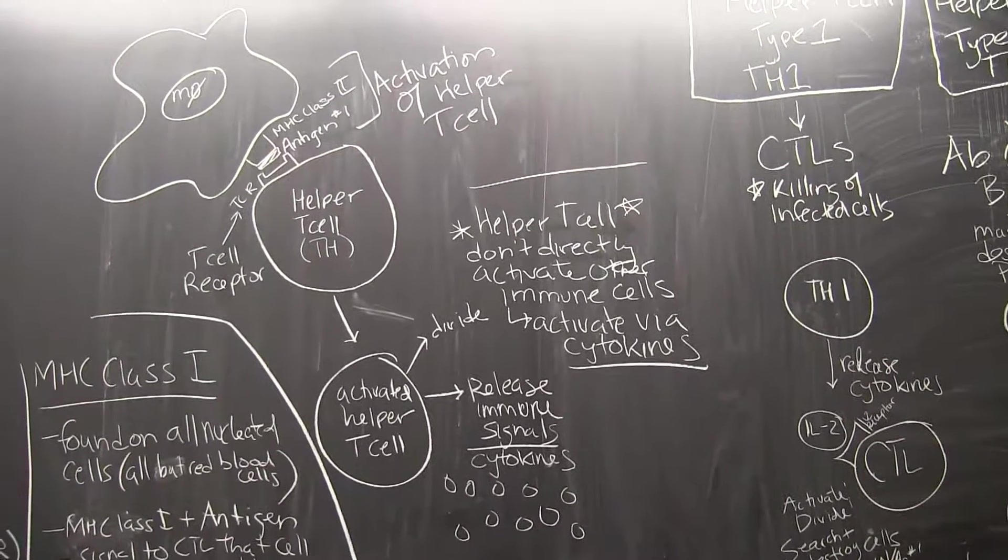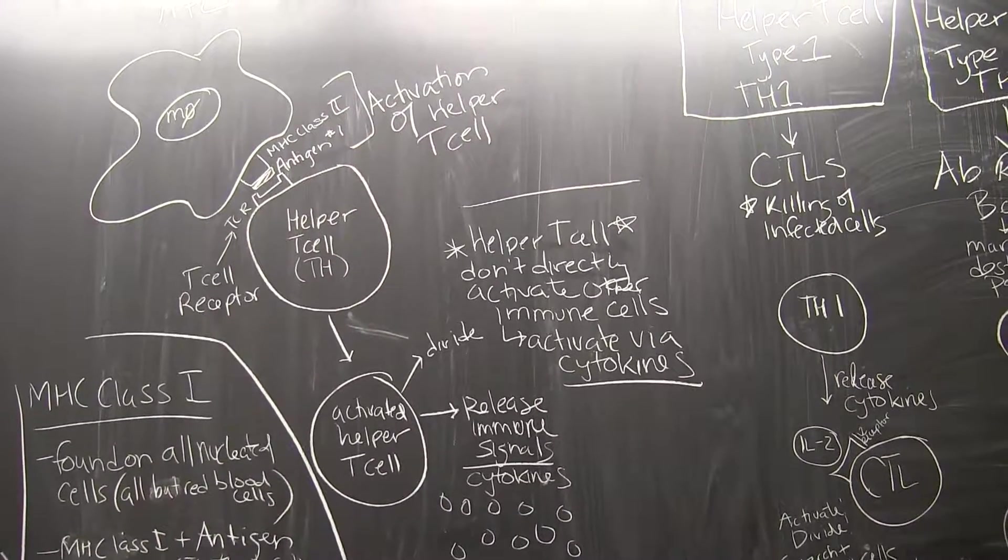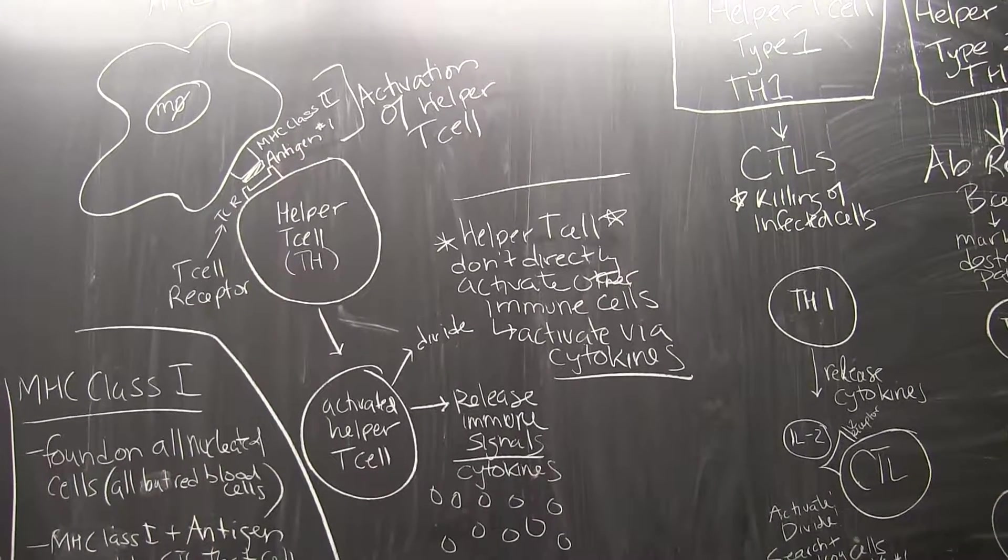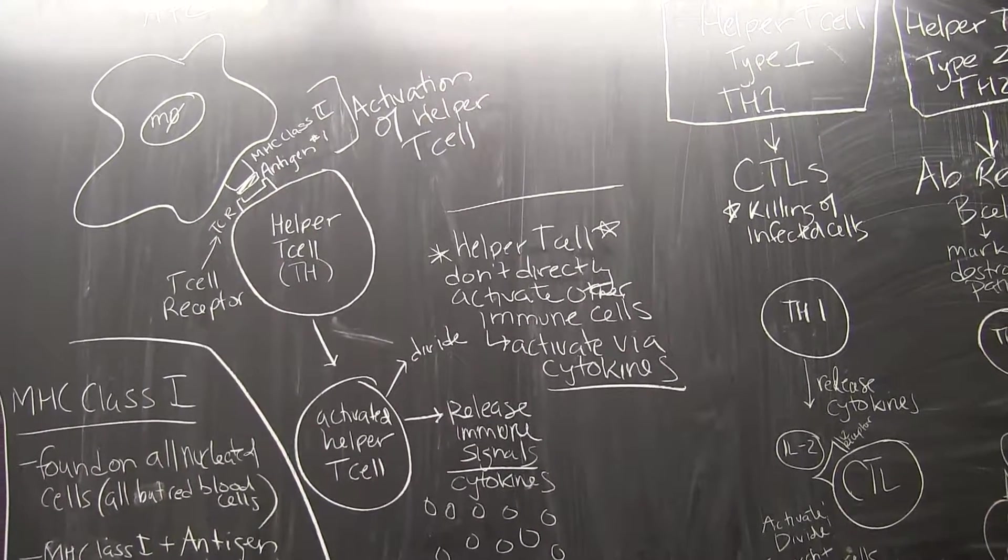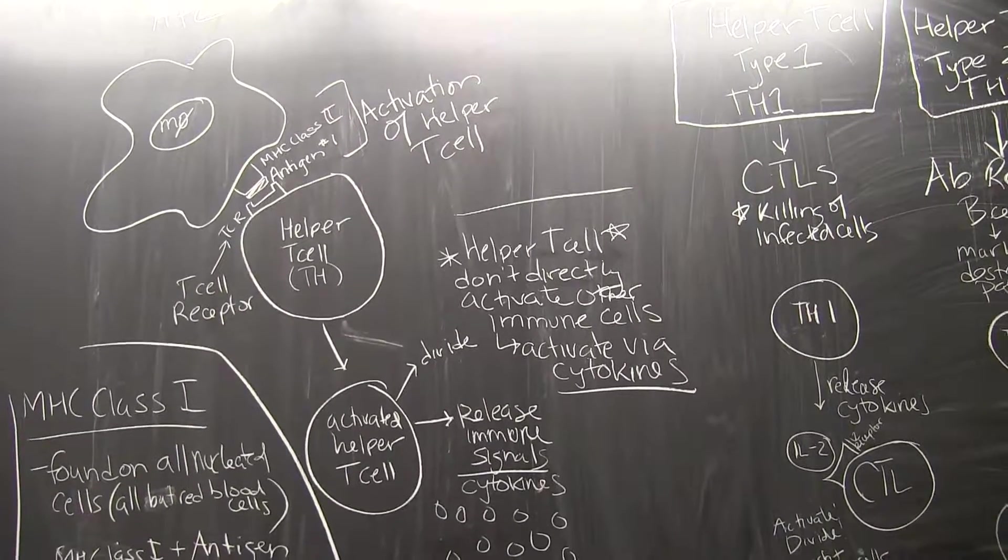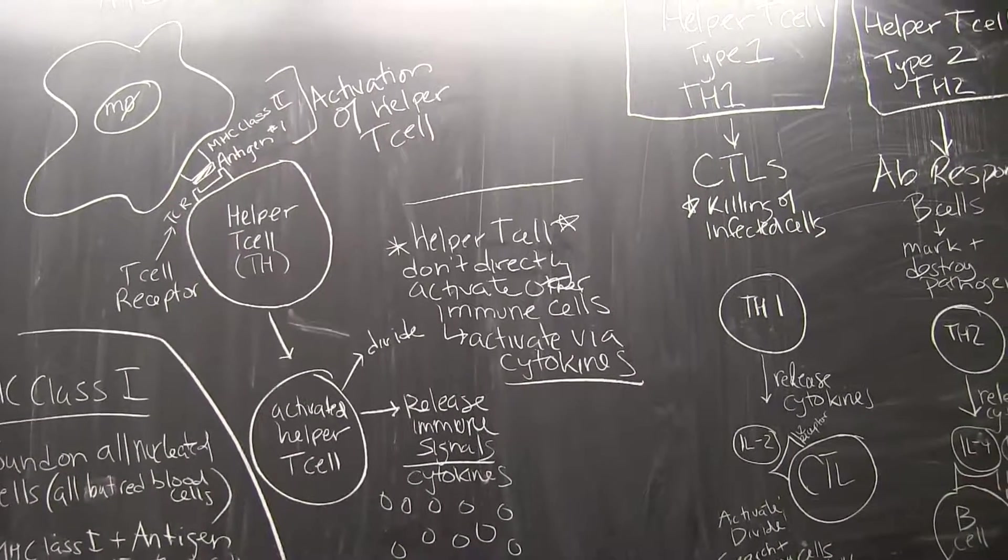So next time we're going to talk about different kinds of helper T cells and how the release of different pools of cytokines can lead to different kinds of immune responses, which is over there on the right.